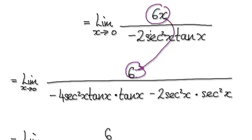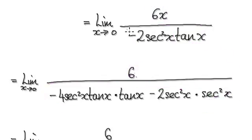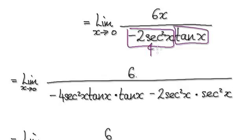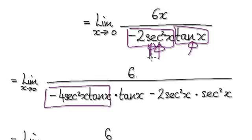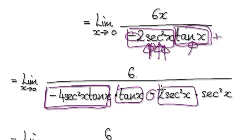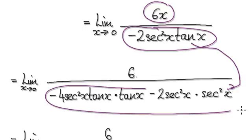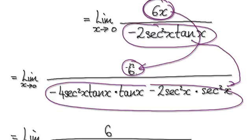Differentiating this would give you a 6. Differentiating this whole thing here will give you this whole thing here. Visualize it: this is a product rule. If you differentiate the first factor it gives you this, and you leave the second factor the same. Then you differentiate the second factor — which is this bit here — and you leave the first factor the same. Differentiating each part gives you the respective derivatives shown here.